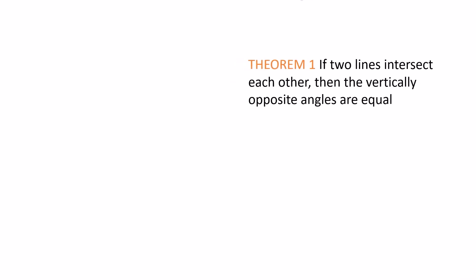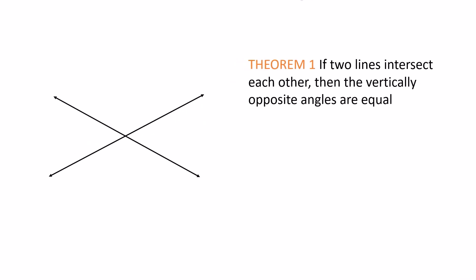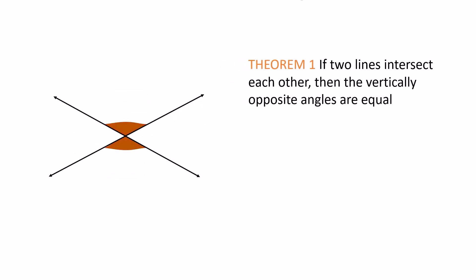Theorem 1: If two lines intersect each other, then the vertically opposite angles are equal.